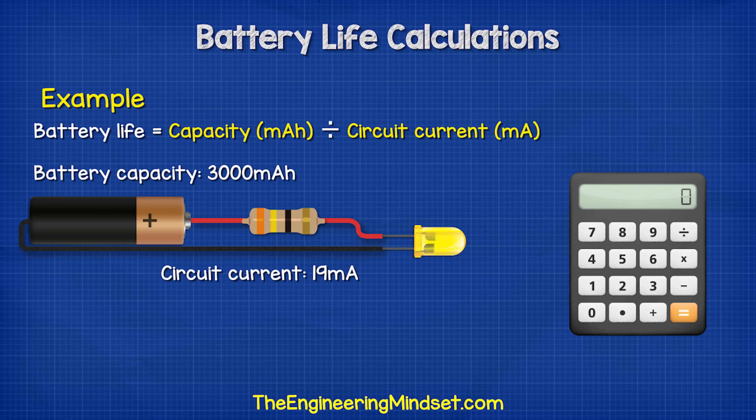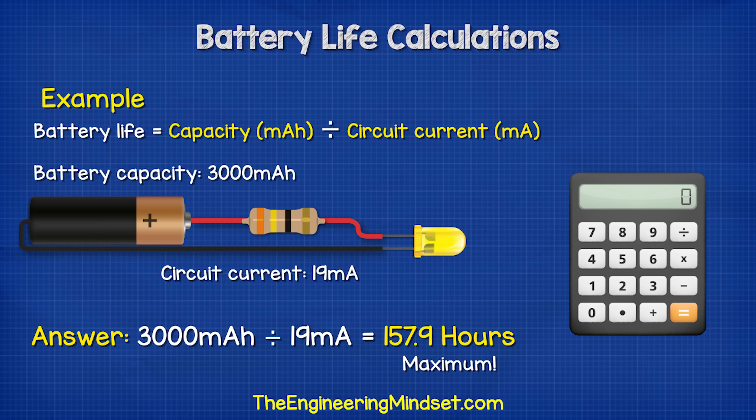So, for example, in this circuit we calculate a demand of 19 milliamps, and the battery has a capacity of 3,000 milliamp hours. So 3,000 divided by 19 gives us 157.9 hours. But this really is the best case scenario, and in reality it almost certainly won't achieve this.